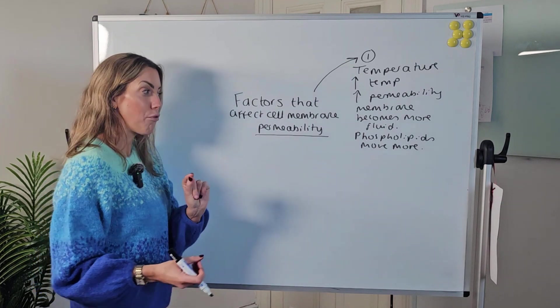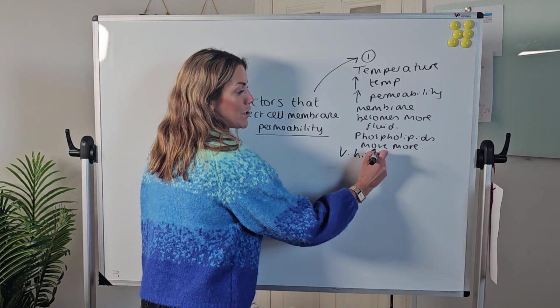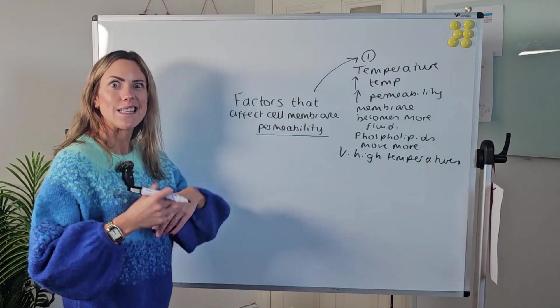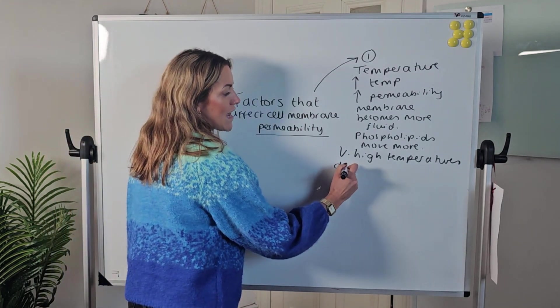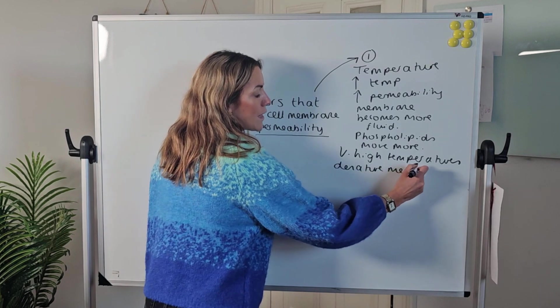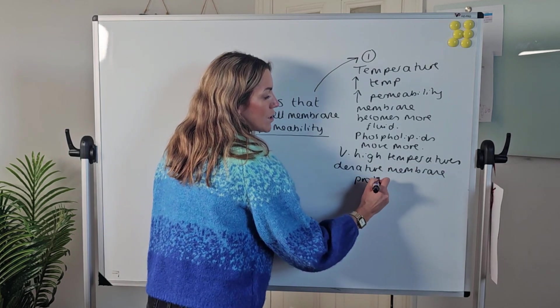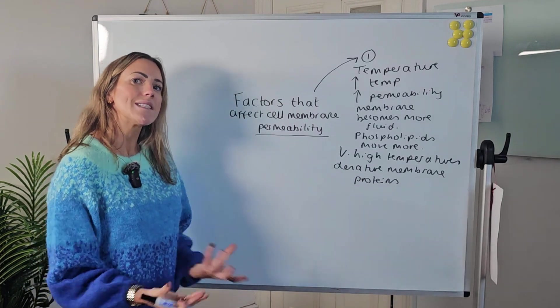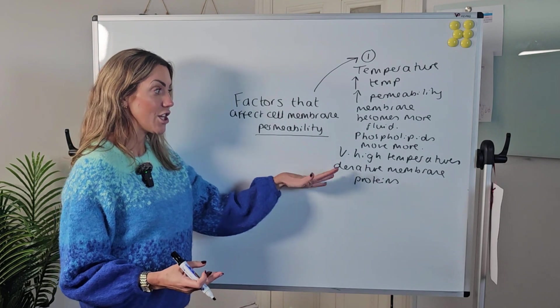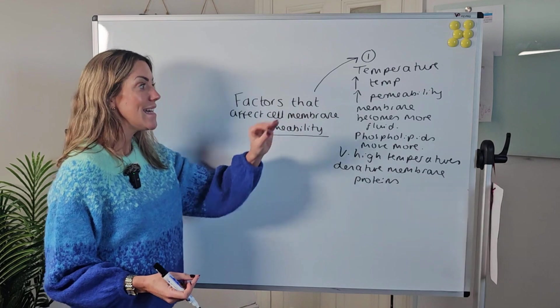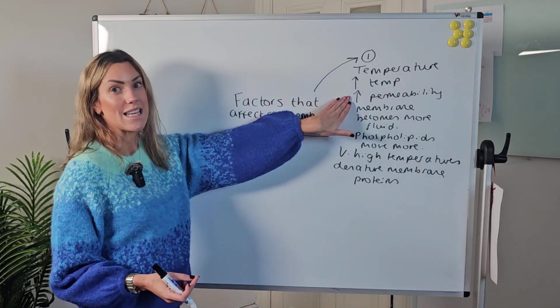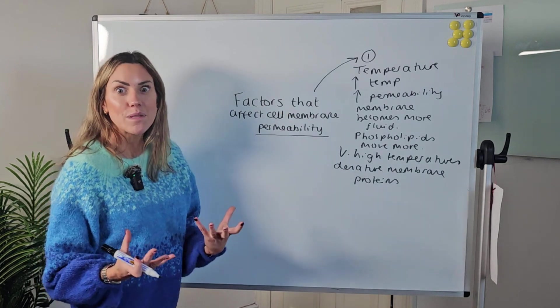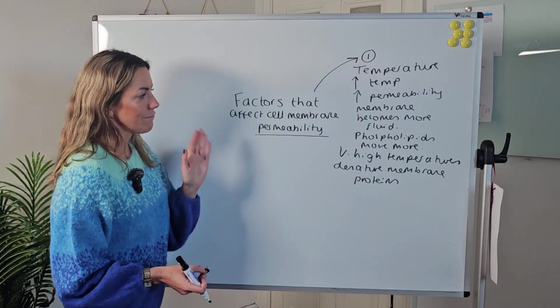The other thing to think about with temperature is the proteins. Very high temperatures, say 60 or even 70 degrees Celsius, denature membrane proteins. You'll have learned about channel proteins, carrier proteins, and glycoproteins. These proteins can lose their tertiary structure, change shape, and be denatured if the temperature gets very high, and that's going to ultimately increase the permeability of the cell membrane because these proteins are no longer able to control what enters and leaves the cell. You're going to end up with more gaps in that phospholipid bilayer.